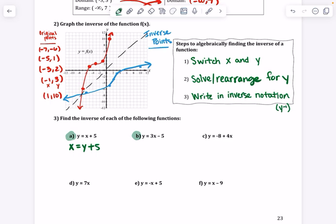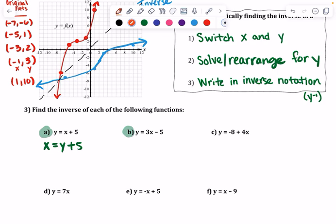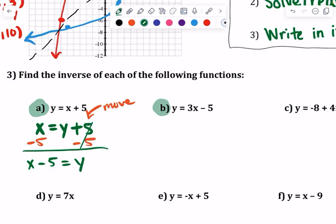So I know we're used to having the y on the left side and now it's on the right, but the process is still the same. If we're trying to get this y by itself, we need to move this five. So if it's y + 5, subtract it over. So x - 5 = y. You got y by itself. We're just going to write the little negative one, which just notes that it's the inverse, not the original. That's all.